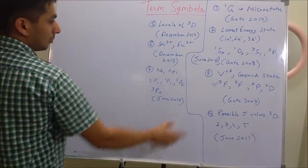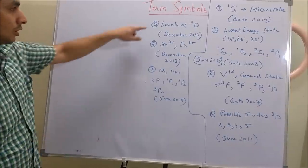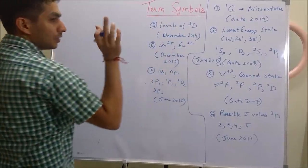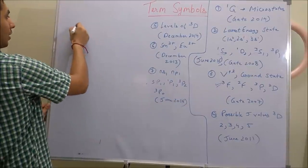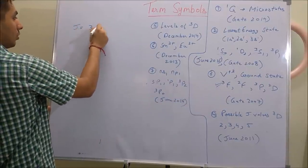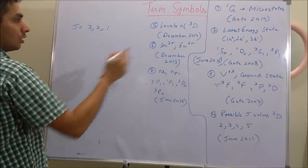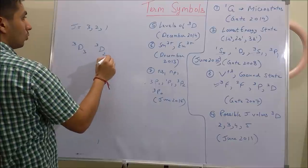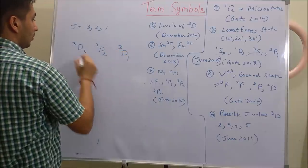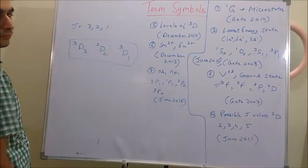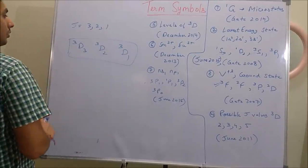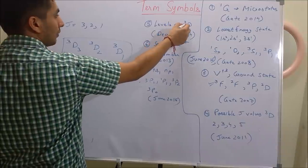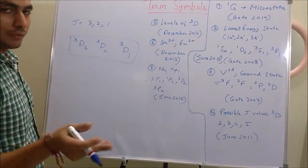The possible levels for the term 3D are obtained by substituting each J value: 3D3, 3D2, and 3D1. These are the three possible levels for the 3D term. You simply calculate the possible J values (from L+S to L−S) and then write the level notation for each.